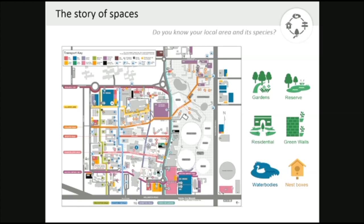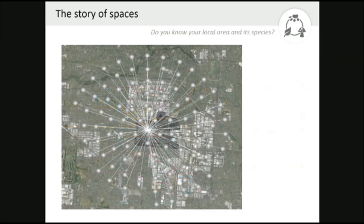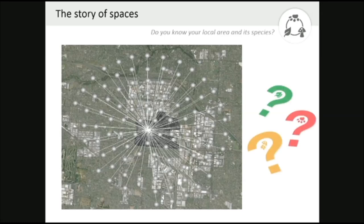One big problem I noticed as a TA at Monash University is that a lot of students don't really know where species are available on campus. For example, in environmental biology, students have to investigate the impact of climate change on plant, animal, or fungi species — seeing if a species is going to breed or flower earlier or later in the year. And basically they don't know where the species are, and they tell us they have to go very far away to monitor them.